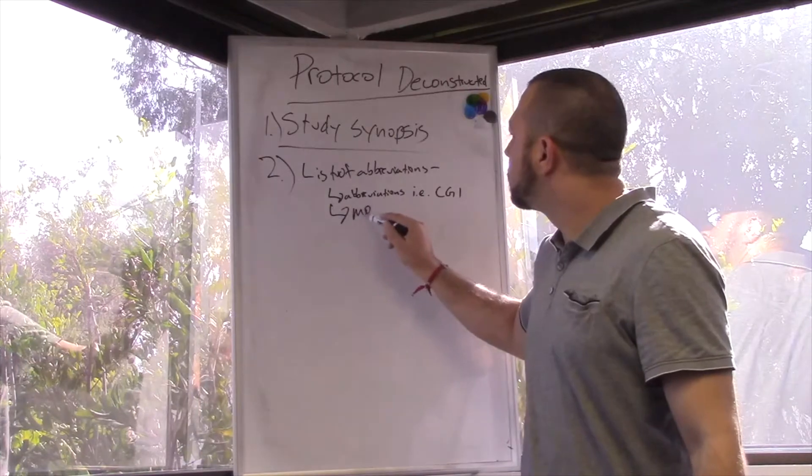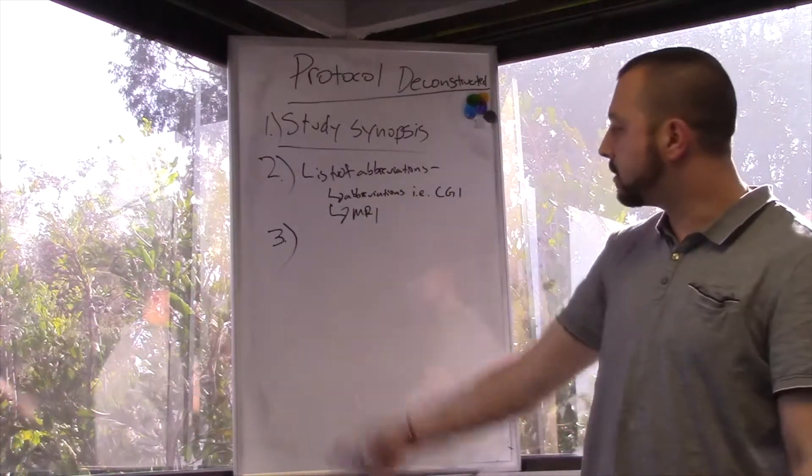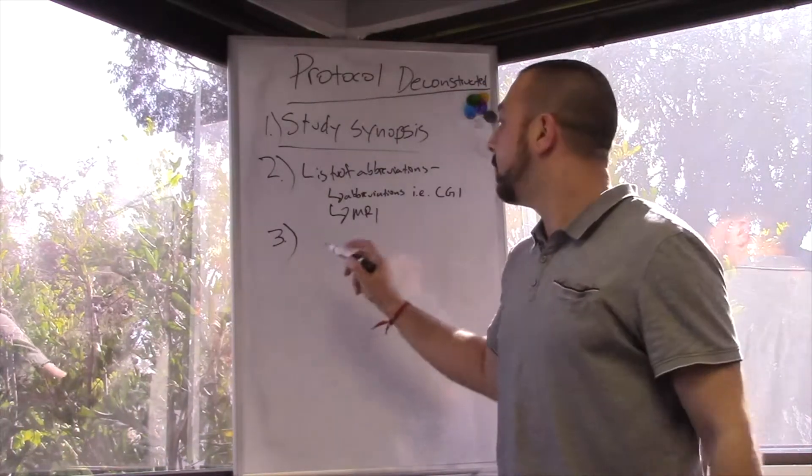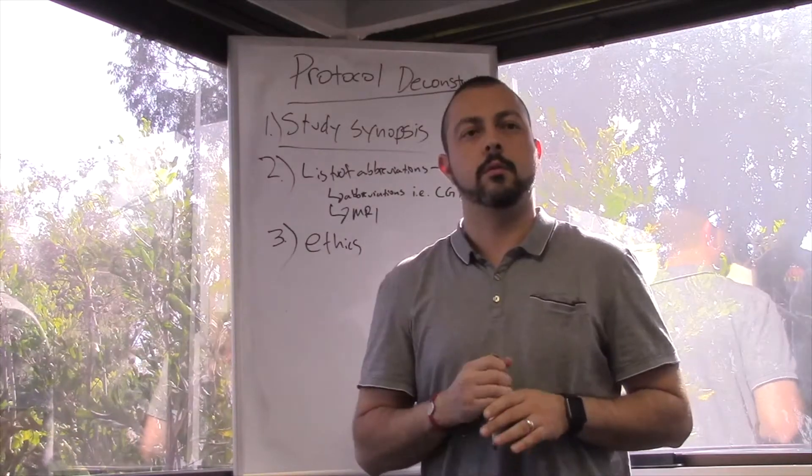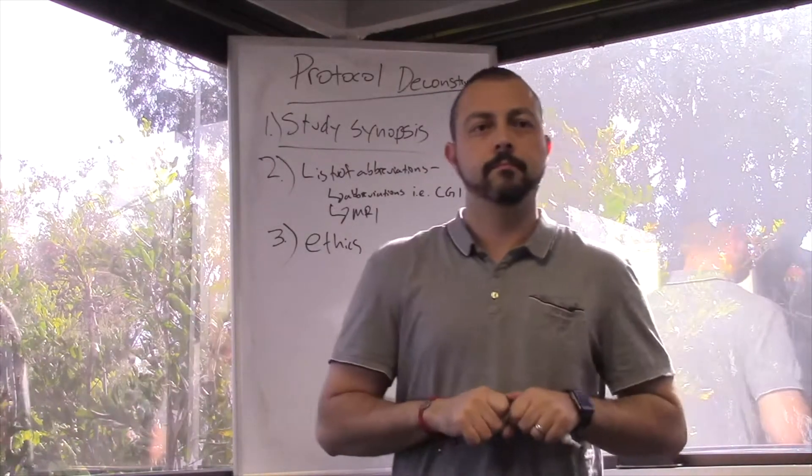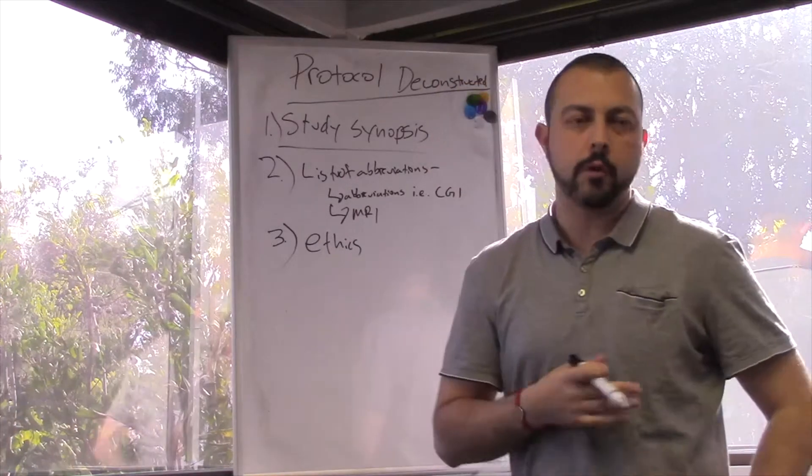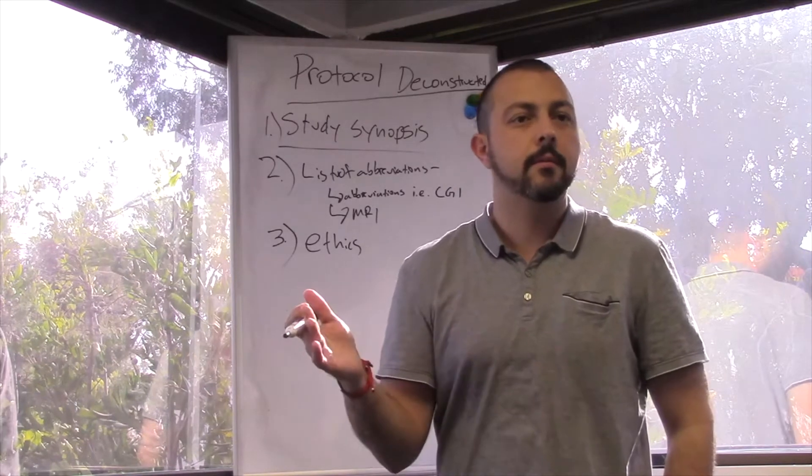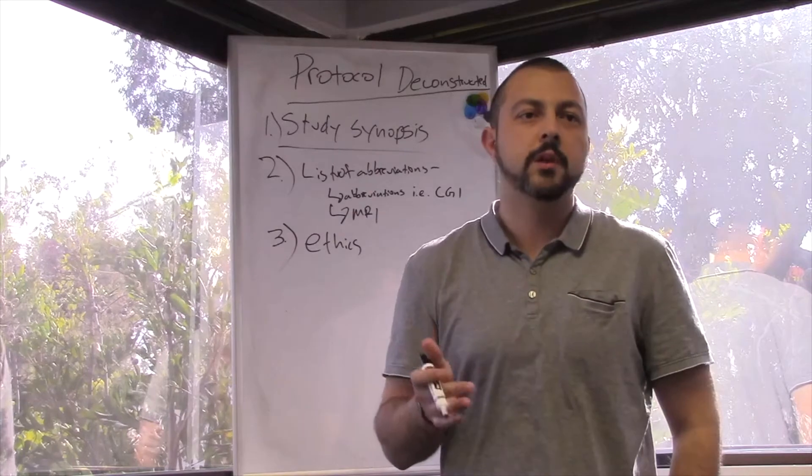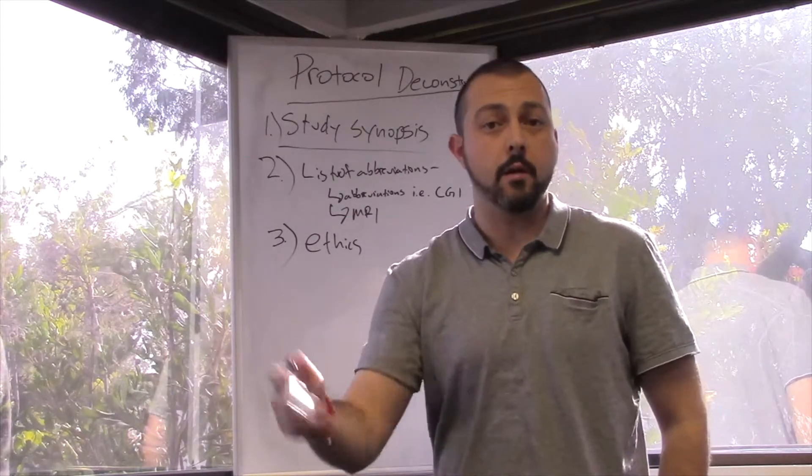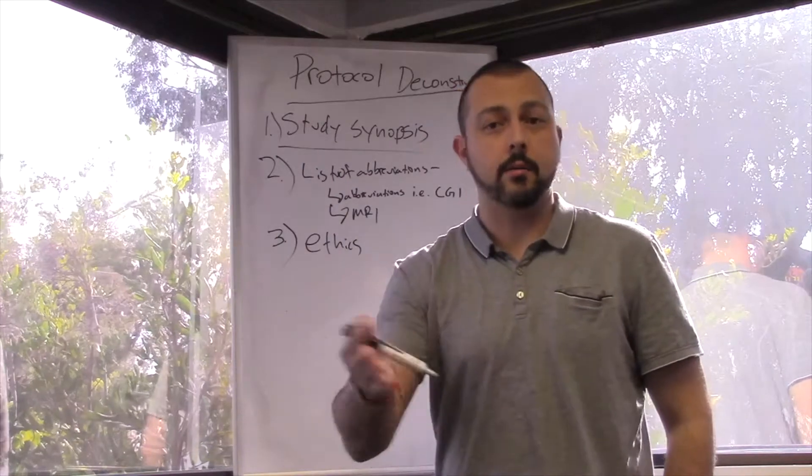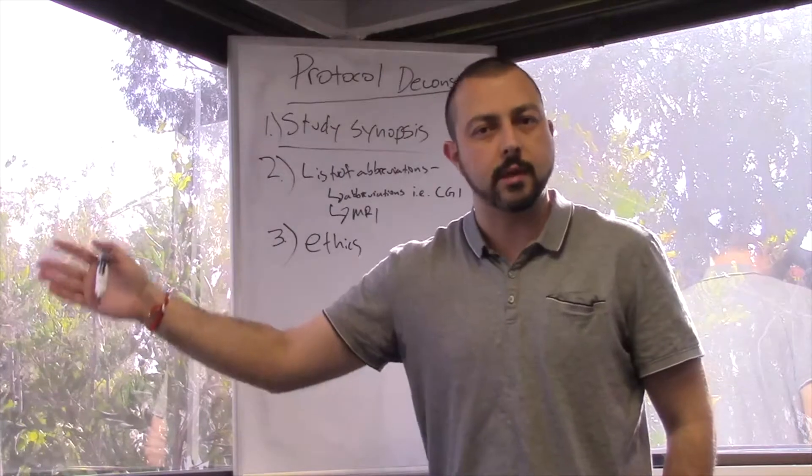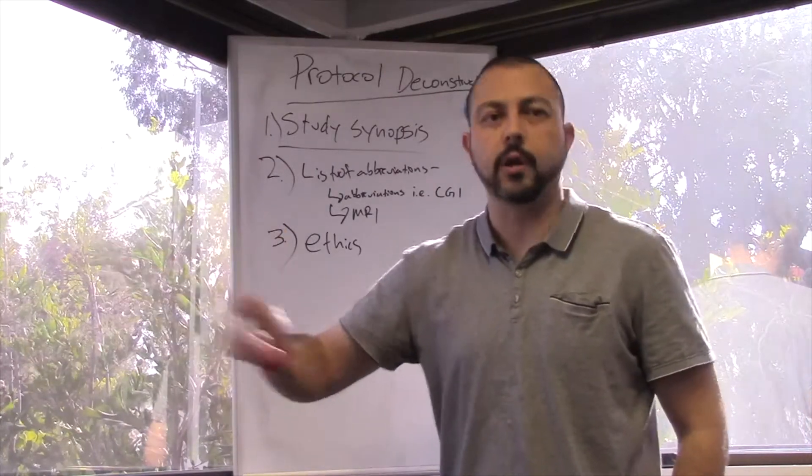Next is ethics. It's very short, just three bullet points and two paragraphs. It's essentially what you would expect. The study will be conducted ethically, according to GCP protocol. It's basically the sponsor covering their legal end and saying ethics, we took ethics into consideration. Please see Good Clinical Practice and the IRB guidelines.